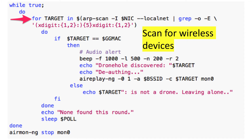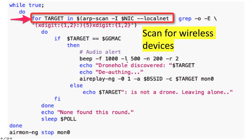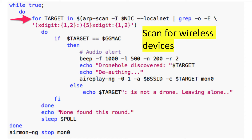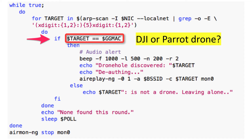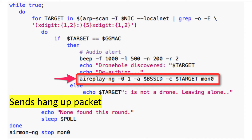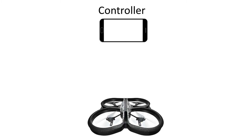Now let's look at the script. Up in the top left-hand corner, we have a for statement that allows the script to scan the network for wireless devices attached to it. Once it finds a device, it extracts that MAC address from the network traffic flowing through the network. Once it extracts that MAC address, it compares it to known DJI or Parrot Drone MAC addresses. Once it identifies one of those drones, it sends the command that essentially says: hang up the connection between the drone and the controller.